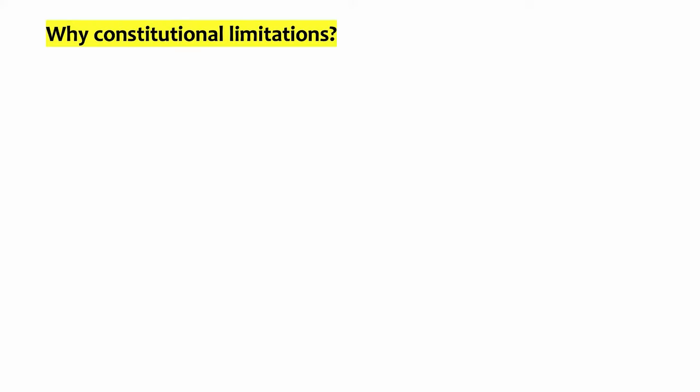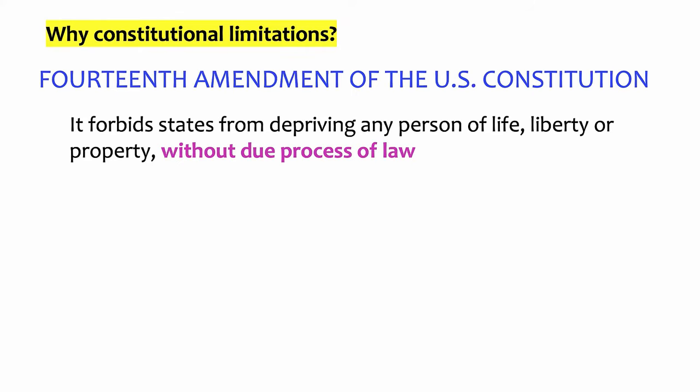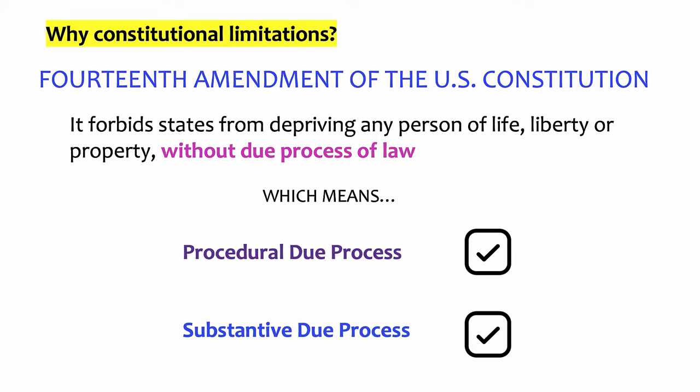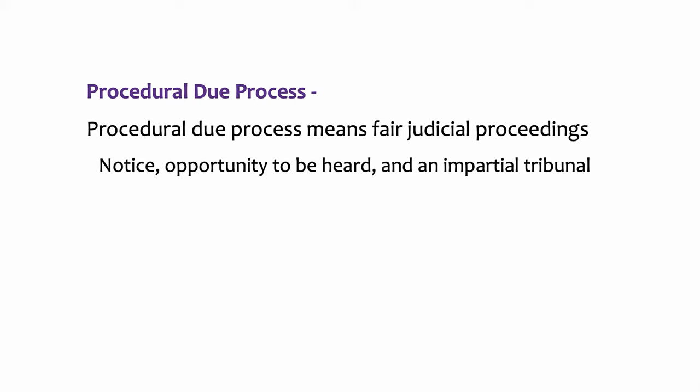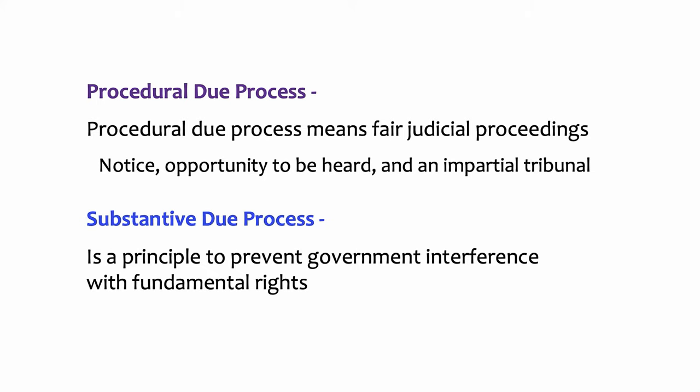Why constitutional limitations? Because of the 14th Amendment of the Constitution, it forbids states from depriving any person of life, liberty, or property without due process of law. During our analysis of in personam jurisdiction, we need to check two boxes: procedural due process and substantive due process. A court cannot run afoul of the 14th Amendment. Procedural due process means fair judicial proceedings — notice, opportunity to be heard, and an impartial tribunal, meaning an impartial decision maker. Substantive due process is a principle to prevent government interference with fundamental rights.